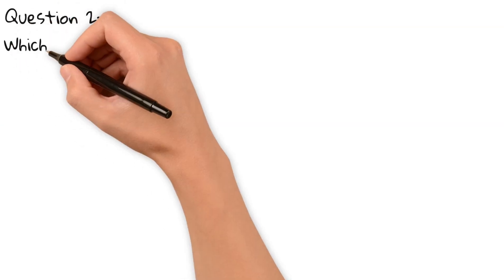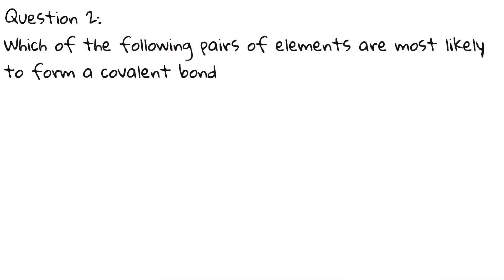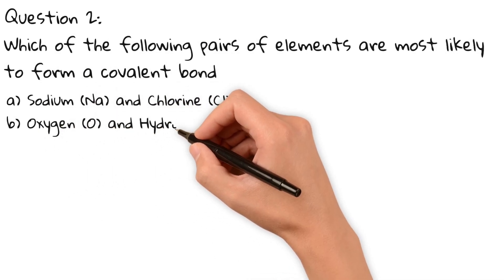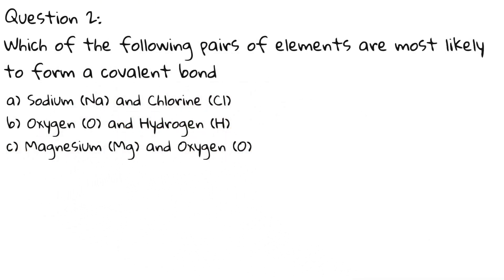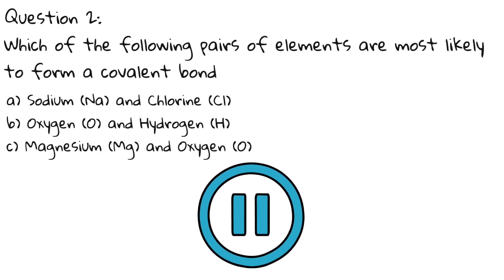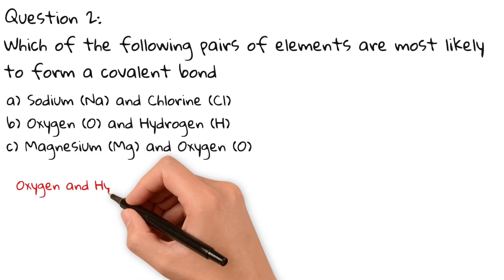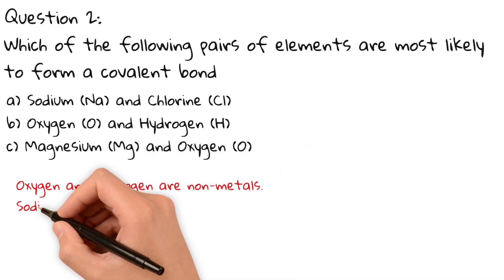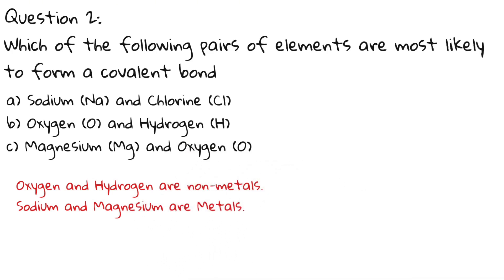Question 2: Which of the following pairs of elements are most likely to form a covalent bond? A: Sodium and chlorine. B: Oxygen and hydrogen. C: Magnesium and oxygen. The correct answer is B — oxygen and hydrogen — because they are both nonmetals. Sodium and chlorine are a metal and a nonmetal, so they would form an ionic bond. The same is true for magnesium and oxygen.